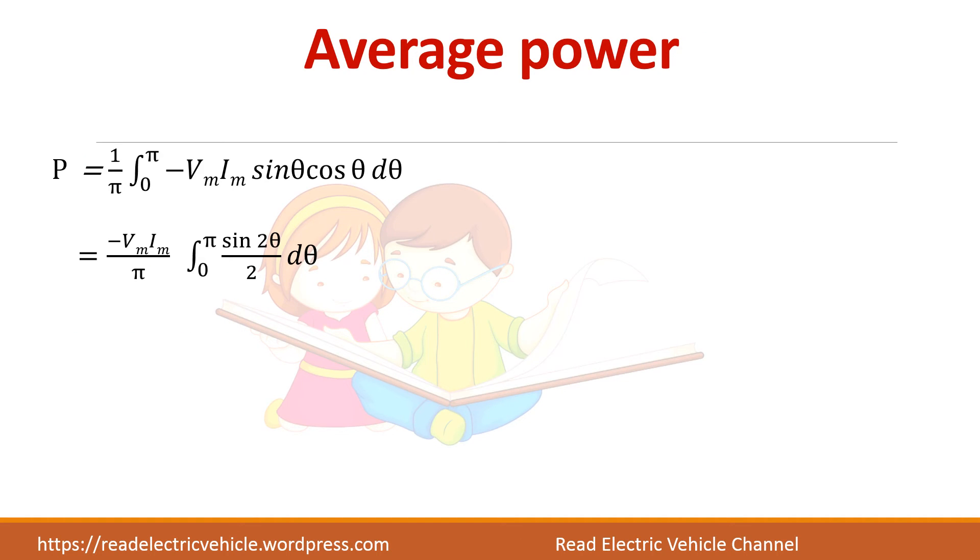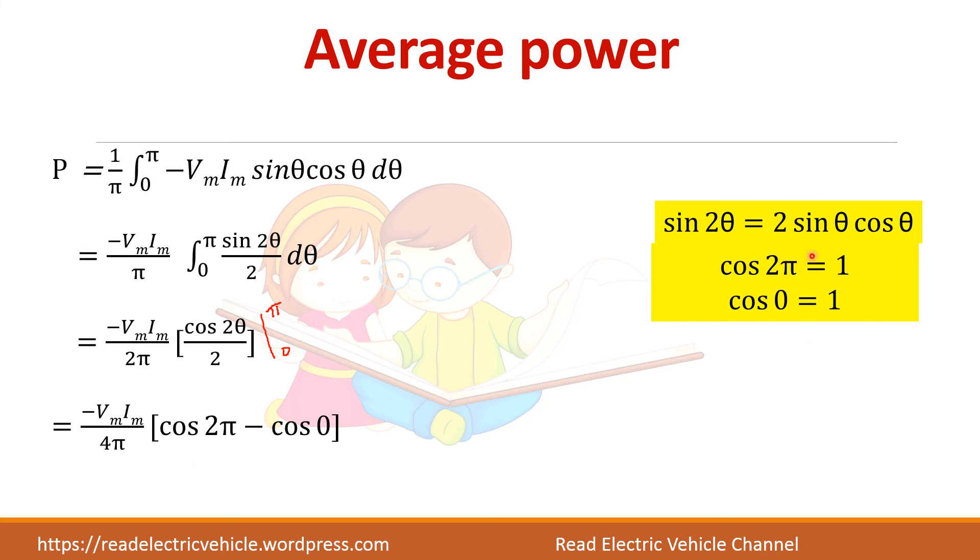Now let us calculate the average power. Write the formula: 1/π integral from 0 to π of Vm Im sin θ cos θ dθ. Sin θ cos θ, you have the formula. Apply this formula and then do the integration. Apply the limits. I have given the formula as well as the values here. So you are getting zero. It means that in a pure inductive circuit the average power will always be zero.